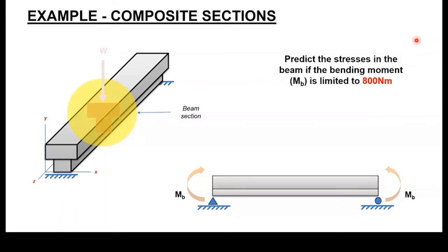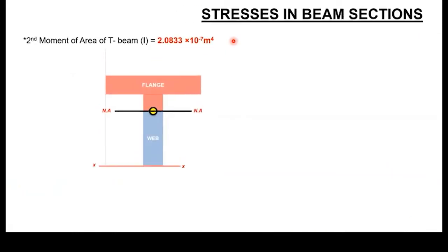Going back to the previous example: we need to predict the stresses in the beam, assuming a bending moment of 800 Nm. We've already calculated I to be 2.08 × 10⁻⁷ m⁴. For the given T-section in a state of sag, the upper part curves inward and is in compression, while the section below the neutral axis is in the state of tension. These are the two states of stress the beam will be experiencing.